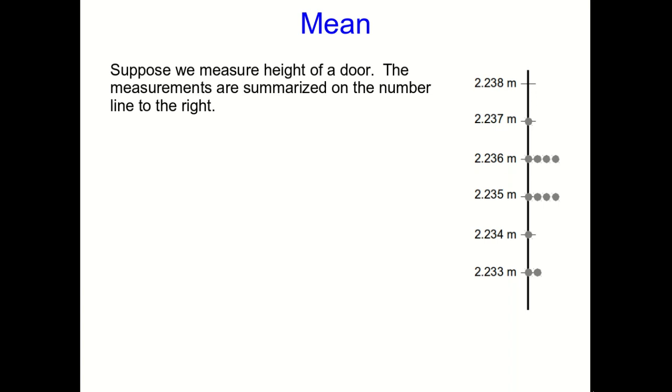But even if you use a really well-designed instrument, very well suited to the measurement you're making, there will still be scatter. For example, the door frame itself might not be quite rectangular. And so the measurement on one side of the door frame might be a little different from the measurement on the other.